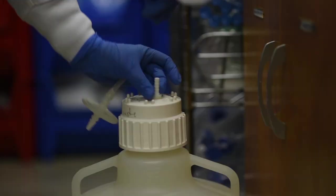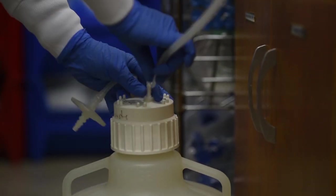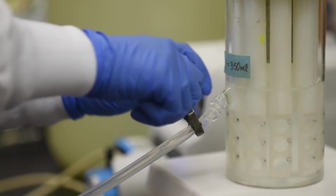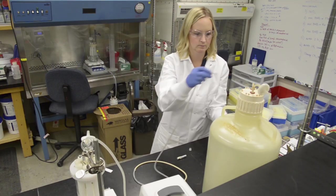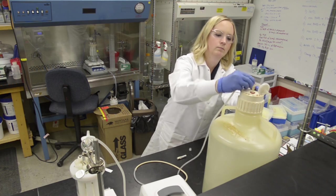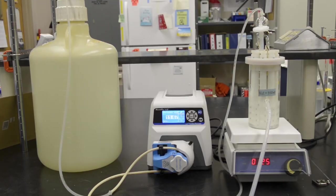At the end of the batch phase, ensure that the effluent tubing is connected to a waste carboy and unclamped. Aseptically, attach the continuous flow tubing to the continuous flow medium carboy. Turn the pump on to begin the continuous flow phase.